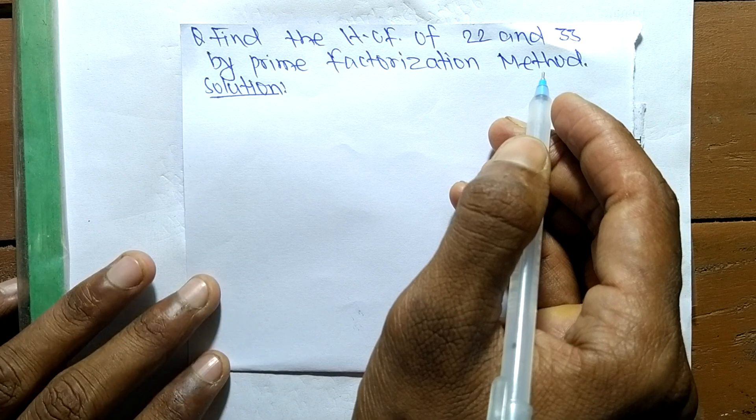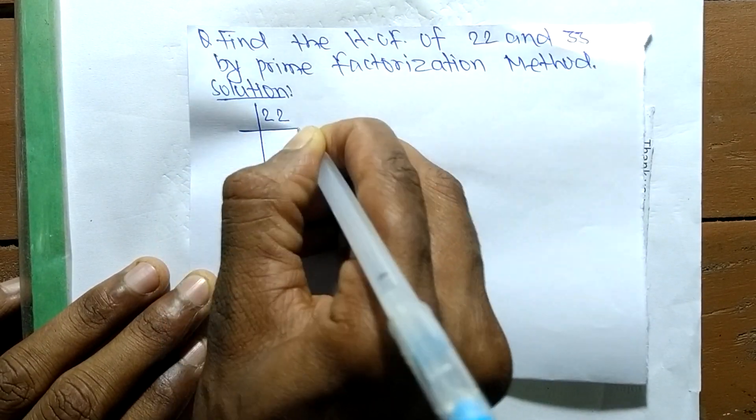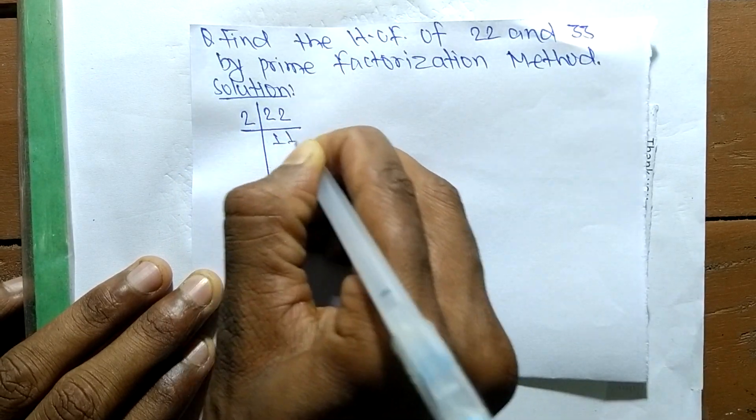So first of all we find out the prime factors of 22, so it is 2 times 11 means 22.